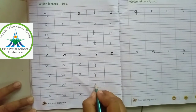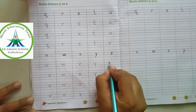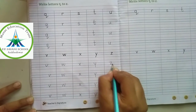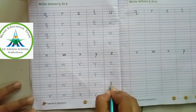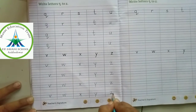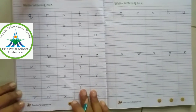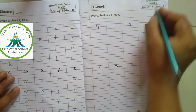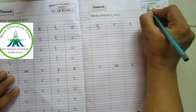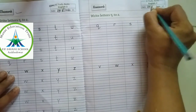Below three lines. Y, Y. Z between two blue lines. Z, Z, Z and Z. This is your classwork and this is your homework. 17, 6.